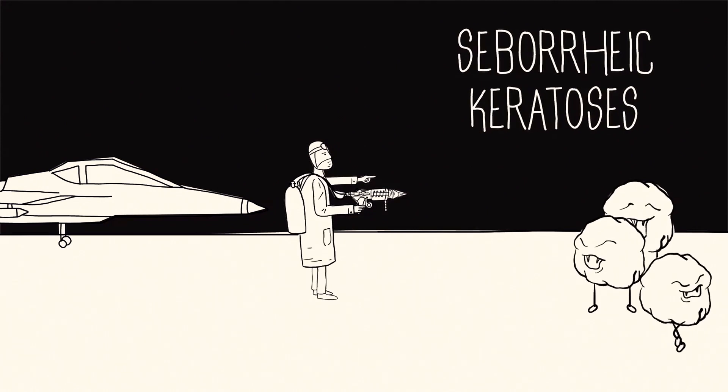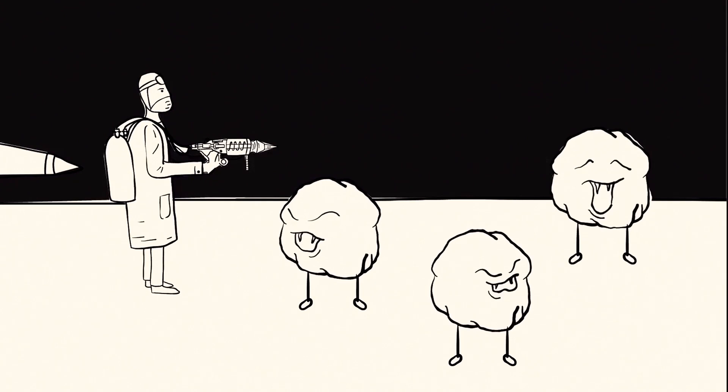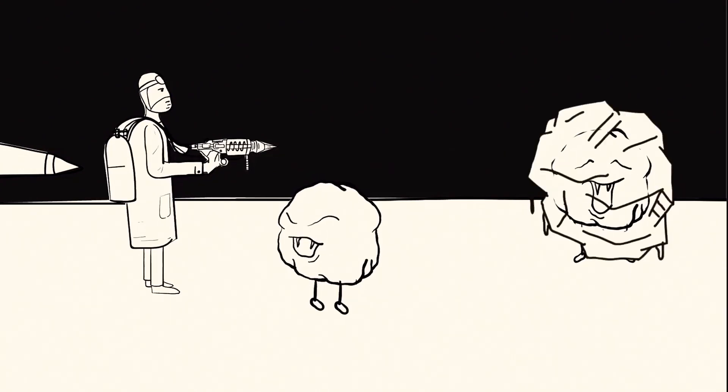Seborrheic keratoses are genetic, wart-like growths that can be yellow, brown, or black. Though harmless, they look scary. Your derm can freeze them off with liquid nitrogen.